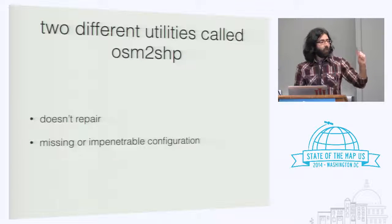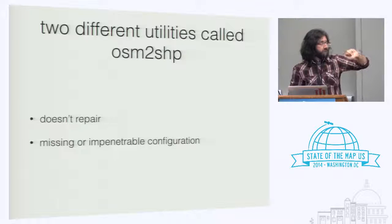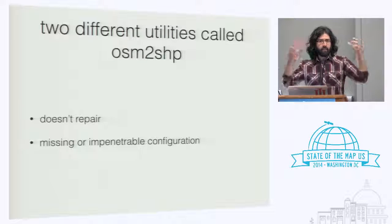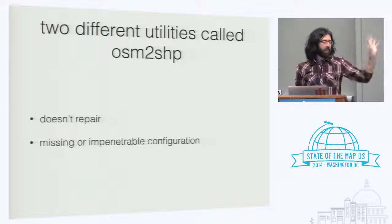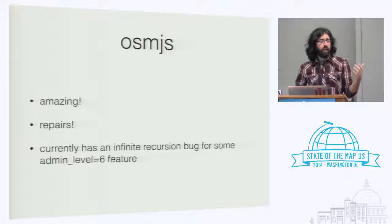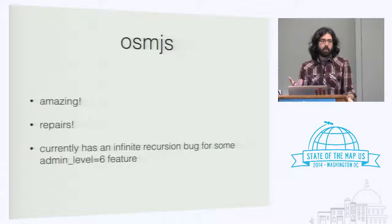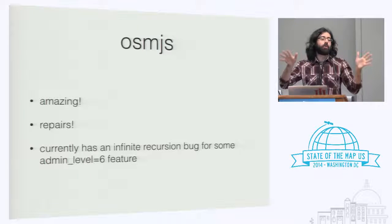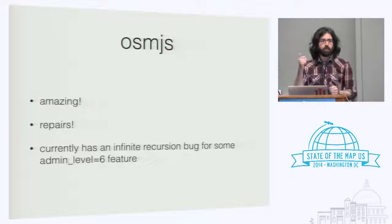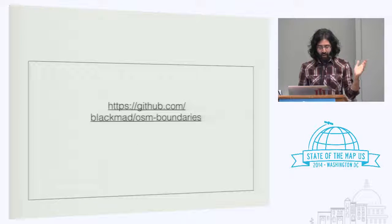There are two different utilities called OSM to Shape, with forks, including one from the GeoFabric guys. They are completely impenetrable — they're in C, and the syntax file is actually just C that gets included. They also don't quite have the mapping we wanted. At the very end we found OSMJS, which I was very suspect of something that has JS in the name. But it is a totally amazing tool — you feed it data, tell it what mapping you want, and it really puts boundaries as a top-level concept with two-pass repair. It currently has a horrible recursion bug that I haven't been able to fix.